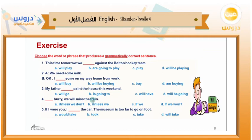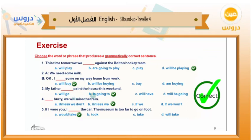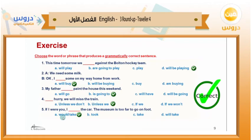Four: 'Unless we hurry, we will miss the train.' Five: 'If I were you' — this is a second conditional, if type 2 — 'I ___ the car': took, take, will take, or would take? The museum is too far to go on foot. The answers: number one, 'this time tomorrow we will be playing against the Bolton hockey team' — future progressive. Number two, 'I will buy some on my way home from work.' Number three, 'my father is going to paint the house this weekend.' Number four, 'unless we hurry, we will miss the train.' Number five, 'if I were you, I would take the car' — type 2 conditional: would plus infinitive.